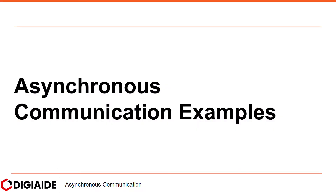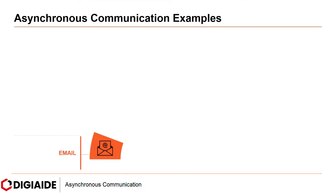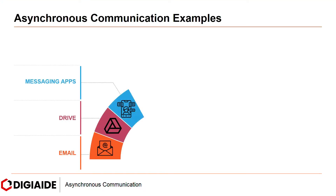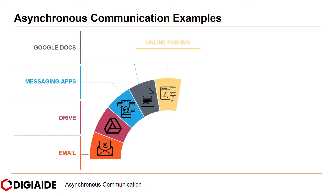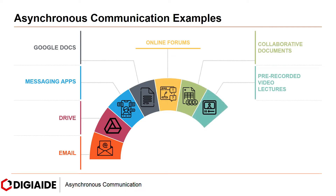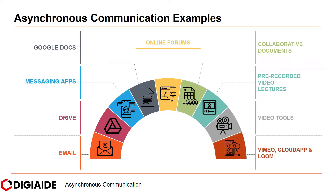Moving on, asynchronous communication examples: email, drive, messaging apps, Google Docs, online forums, collaborative documents, pre-recorded video lectures, video tools, and platforms such as Vimeo, CloudApp, and Loom.